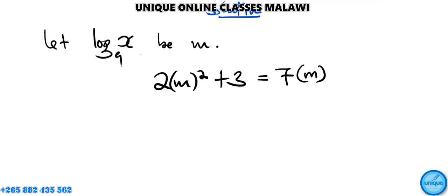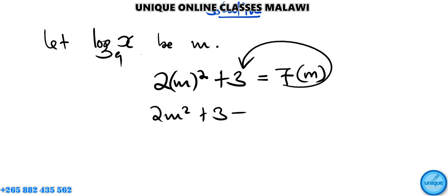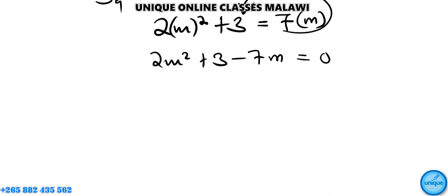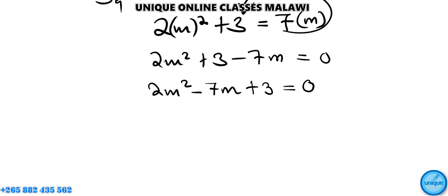Looking at this, we have a quadratic equation. Rearranging it gives us 2m squared minus 7m plus 3 is equal to zero. We're going to solve this either by quadratic formula, factorization, or completing the square.